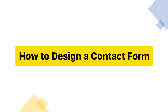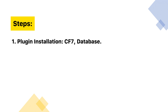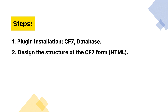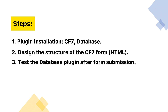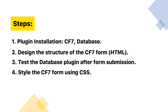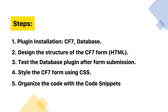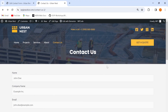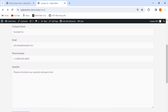Hi everyone, welcome back to the Contact Form 7 tutorial. In the last video we discussed the first three steps of designing a contact form, which involved installing the CF7 and database plugin, designing the structure of our contact form by writing HTML code, and testing the functionality of our database plugin. In this video we'll learn how to design the layout of our contact form by writing CSS code, and then organizing that code using the Code Snippets plugin. Let's get started.